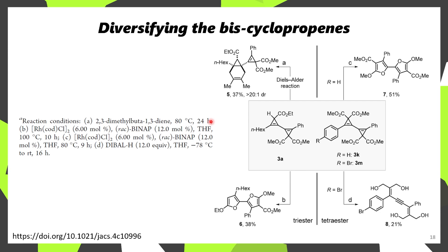If you're wondering what you can do with those bis-cyclopropenes, it turns out that if you have the bis-ester mono-ester bis-cyclopropene and you do a Diels-Alder reaction with it, the less substituted cyclopropene possessing the mono-ester will undergo the Diels-Alder reaction with 20-to-1 regioselectivity. Additionally, if you do some rhodium chemistry with these — either with the triester or the tetraester — you can get bis-furan derivatives.